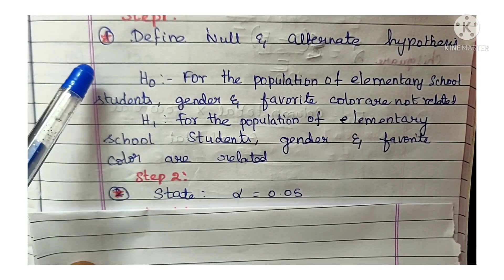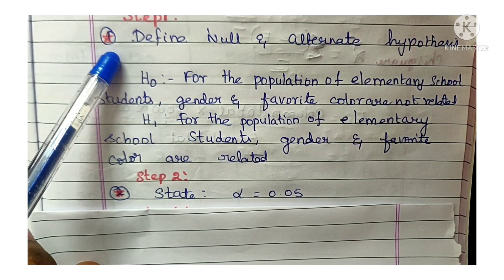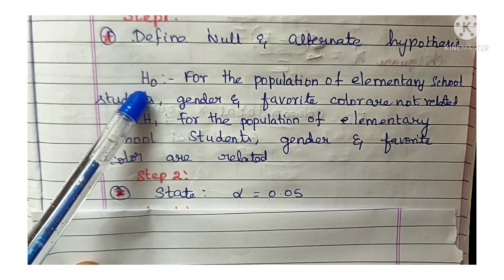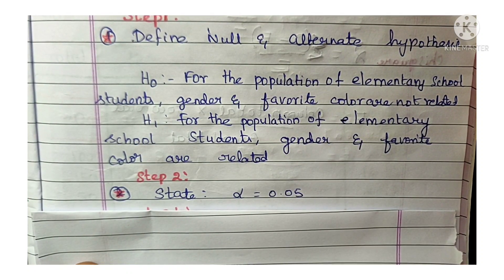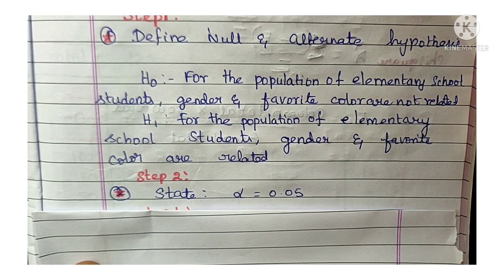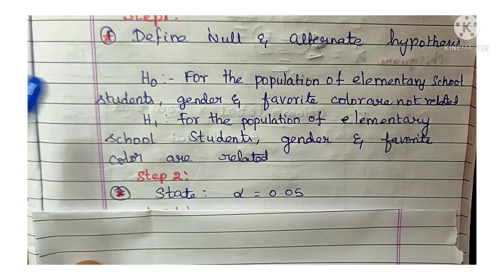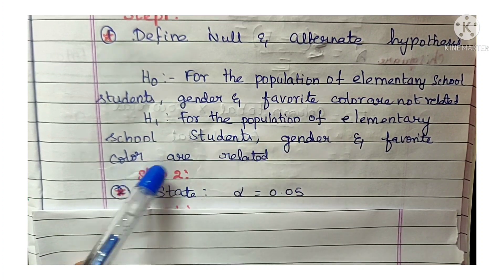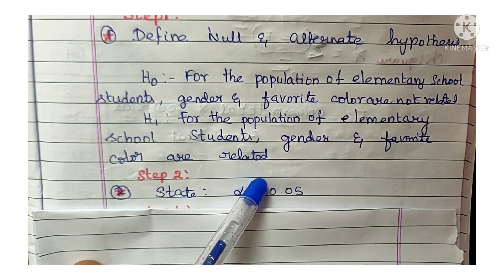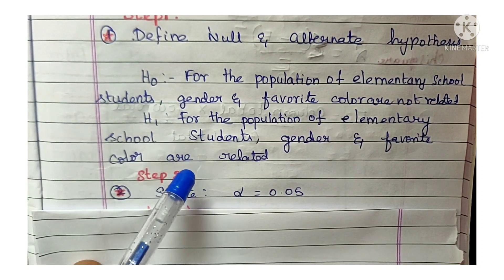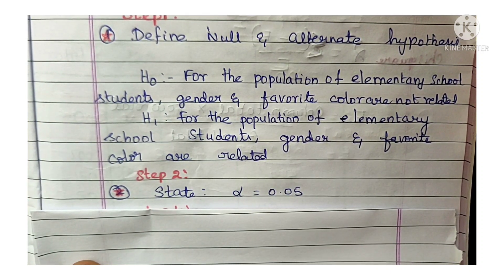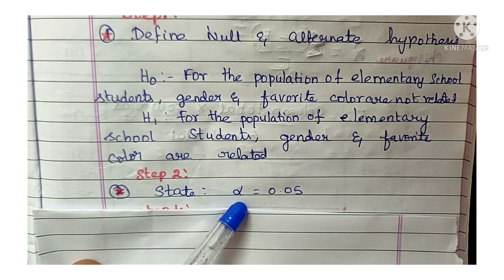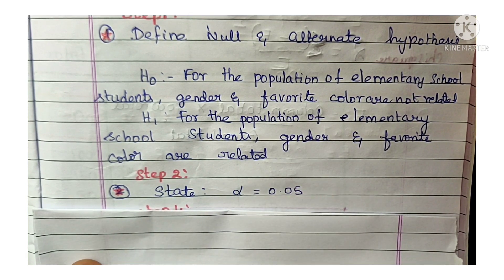When testing significance, the first step is to define the null hypothesis and alternate hypothesis. Null hypothesis H0: for the population of elementary school students, gender and favorite color are not related. Alternate hypothesis H1: for the population of elementary school students, gender and favorite color are related.